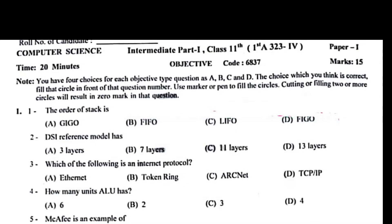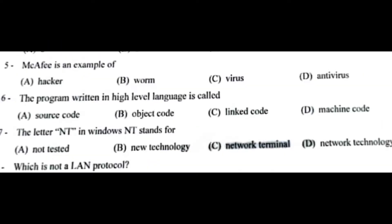The order of stack is last in first out. OSI reference model has seven layers. Which of the following is an internet protocol: TCP/IP. ALU has two. McAfee is an example of antivirus. The program written in high level languages is called source code.